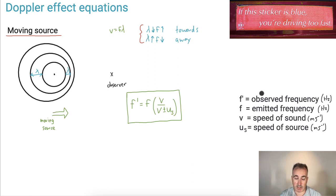We've got observed frequency, that's what you actually measure. Emitted frequency, that's in hertz. And we've got the speed of sound. So the sound is actually that's this V here. It's usually around 330 meters per second or so.